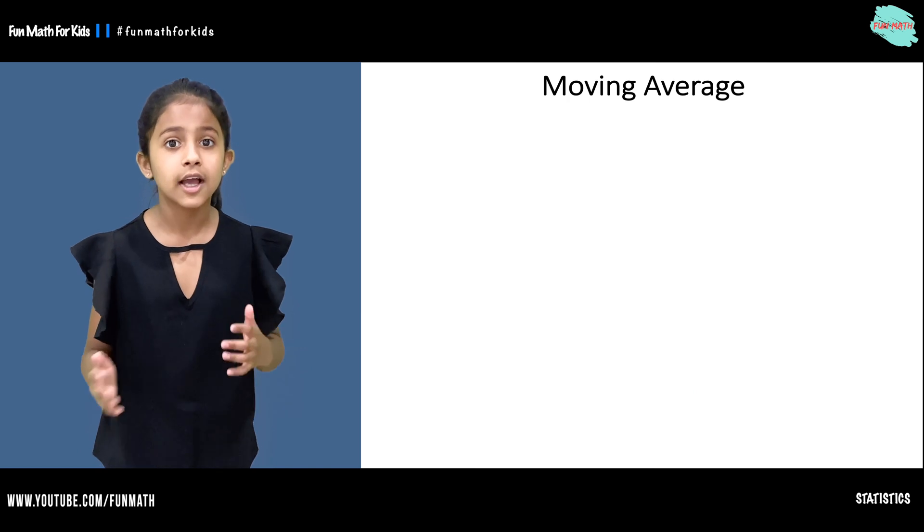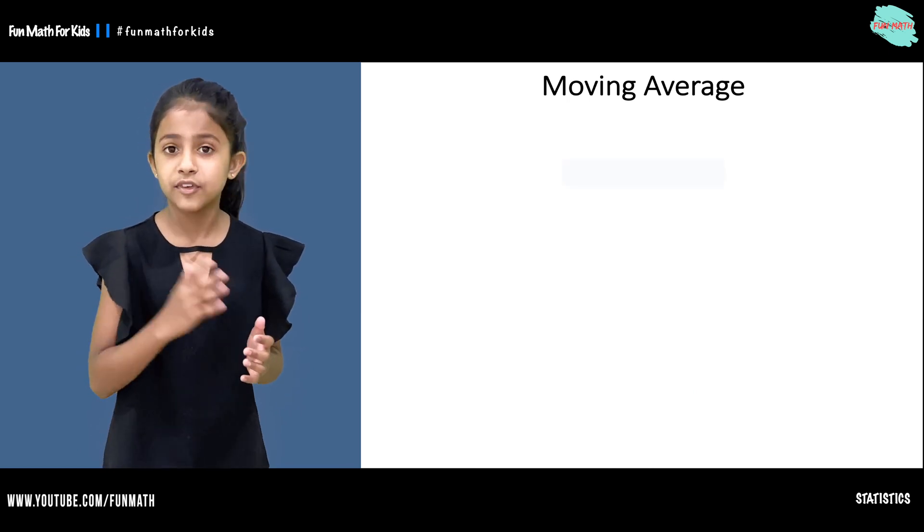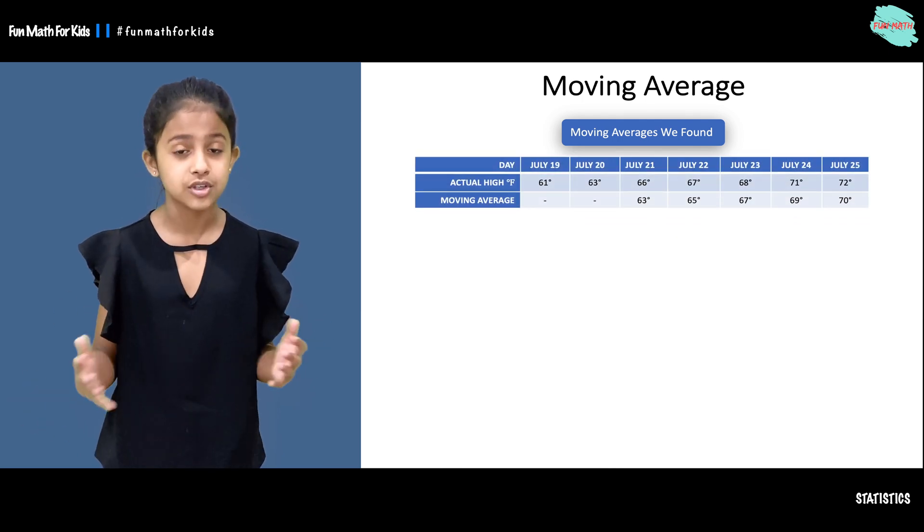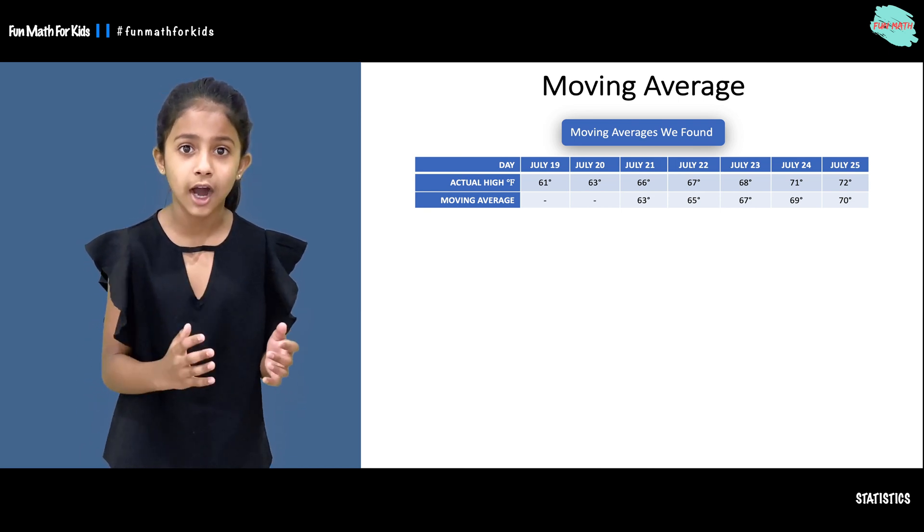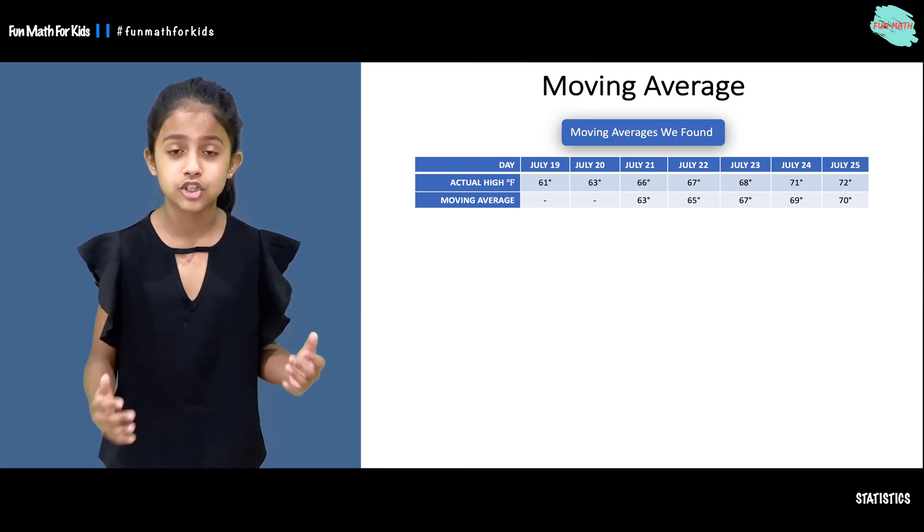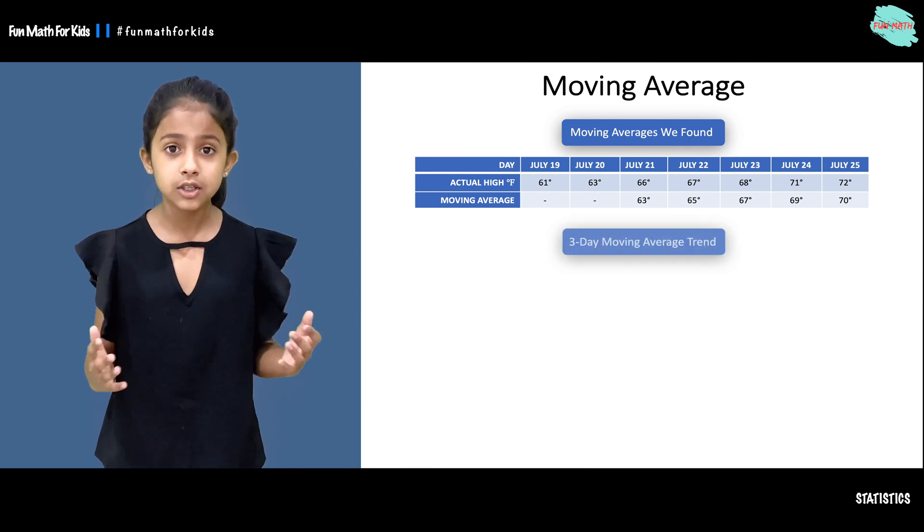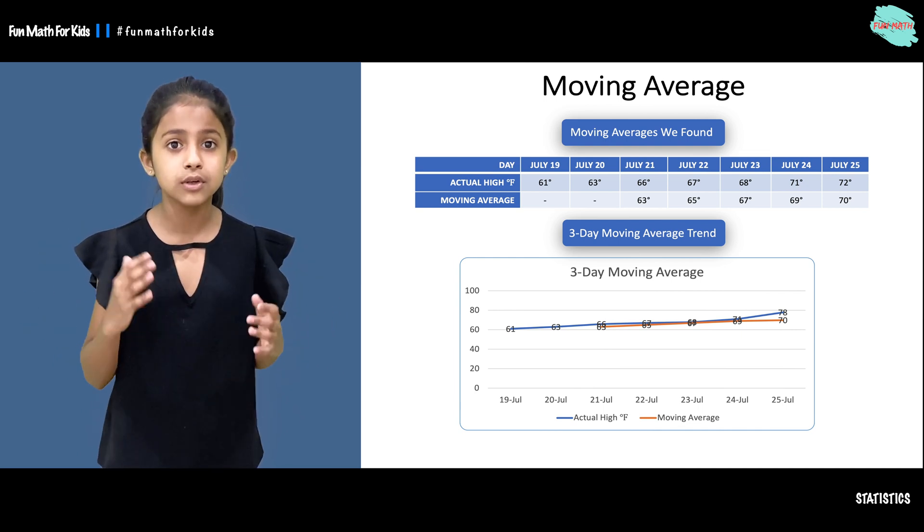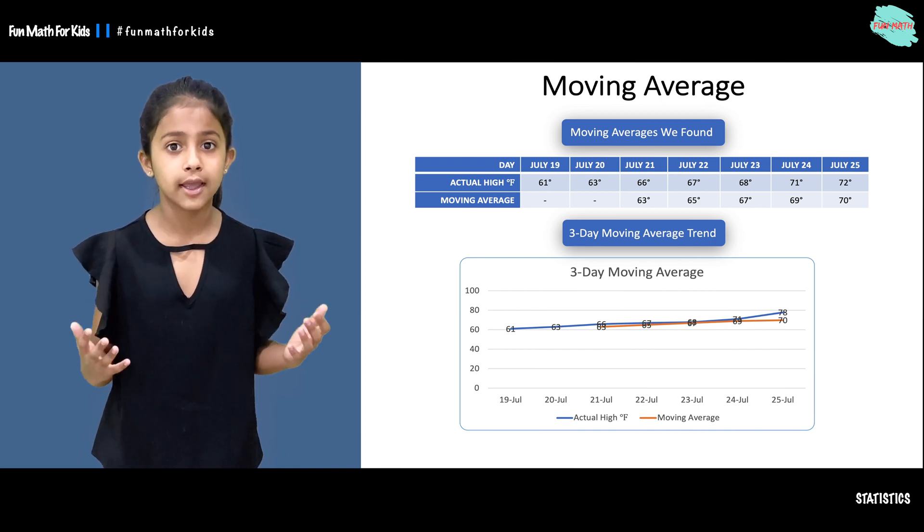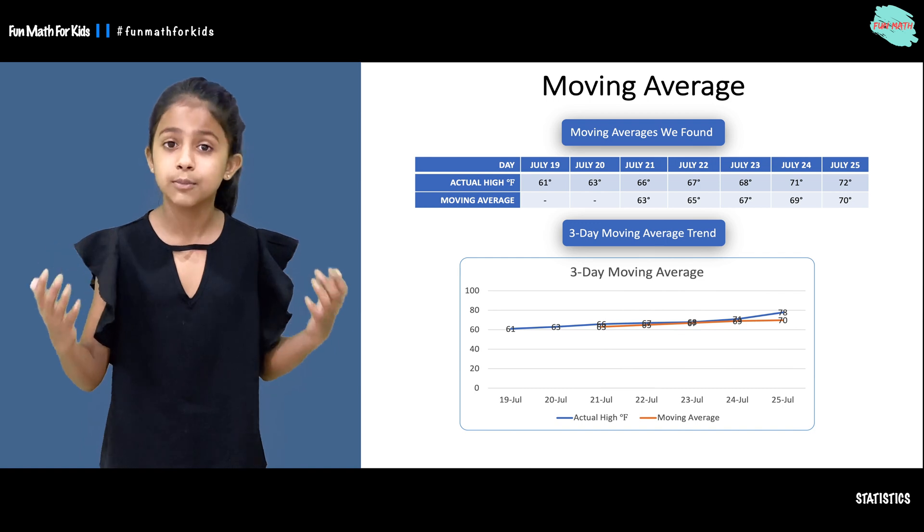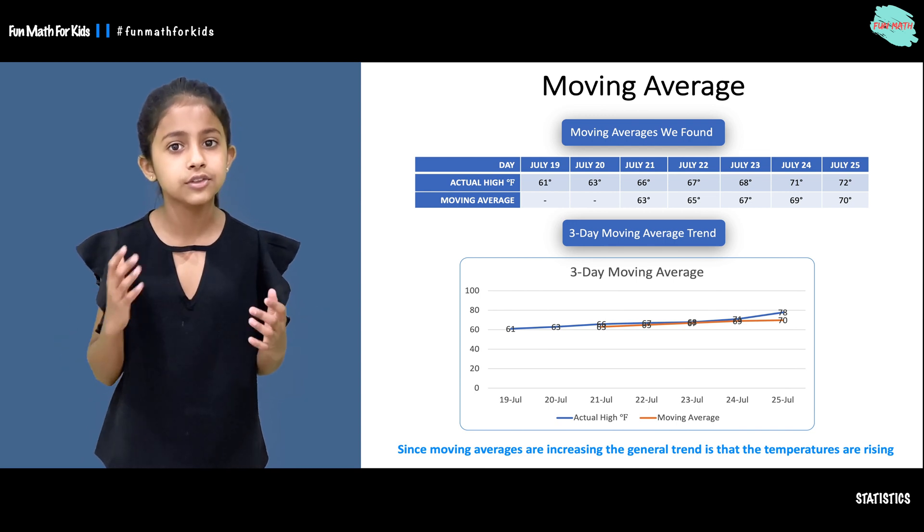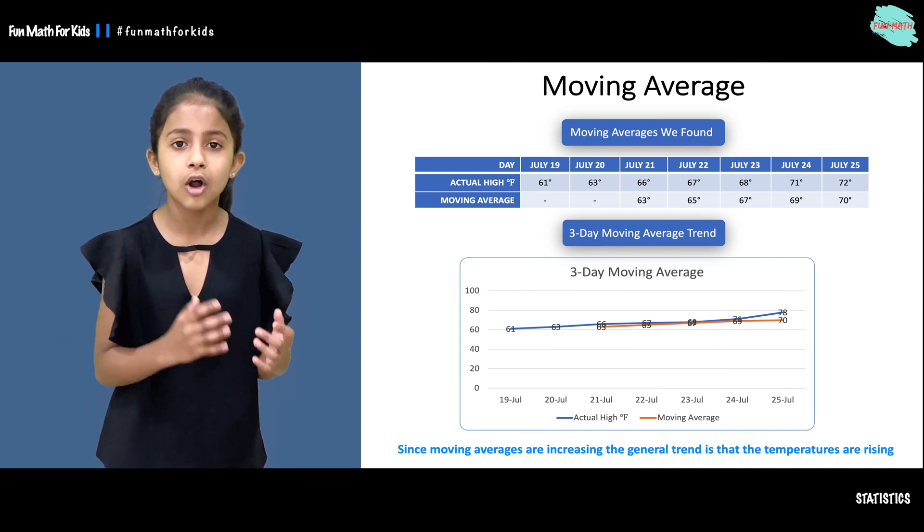Now let's talk about the three day moving average trends. Here we have moving average trends. We have the actual high temperature and the moving averages we found. In our line graph, we have the three day moving average trends. The blue line is the actual high temperature and the orange line is the moving average we have found. Since moving averages are increasing, the general trend is that the temperatures are rising.